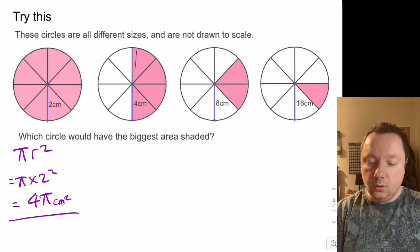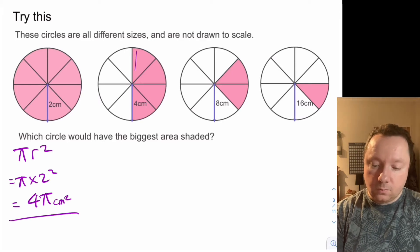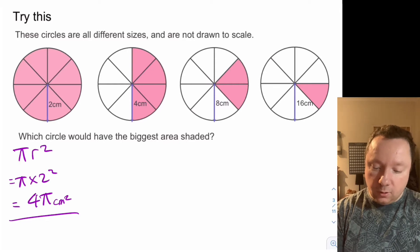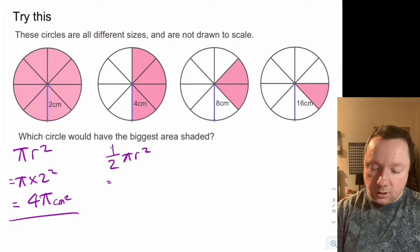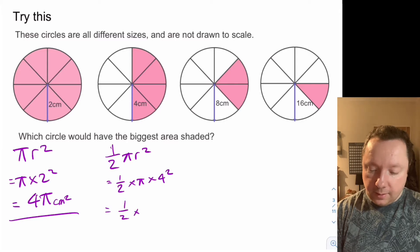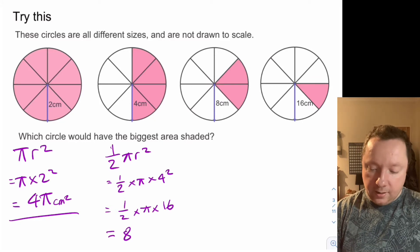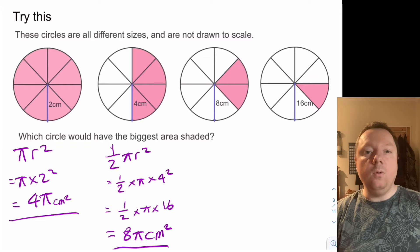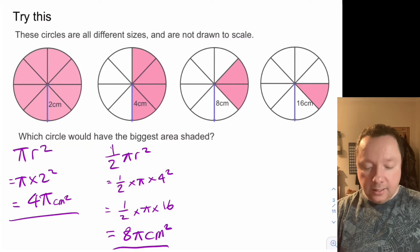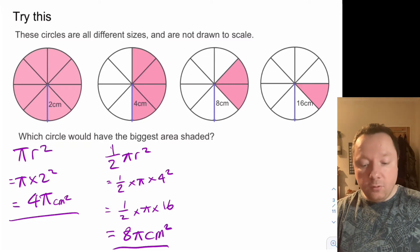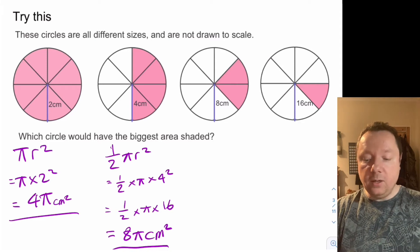The next one is obviously half a circle so I'm going to have to do a half of pi r squared, which is a half times pi times four squared, which is a half times pi times 16. A half of 16 is eight, so it's eight pi centimetres squared. Without actually working that out as a number, you can see that eight pi is bigger than four pi.